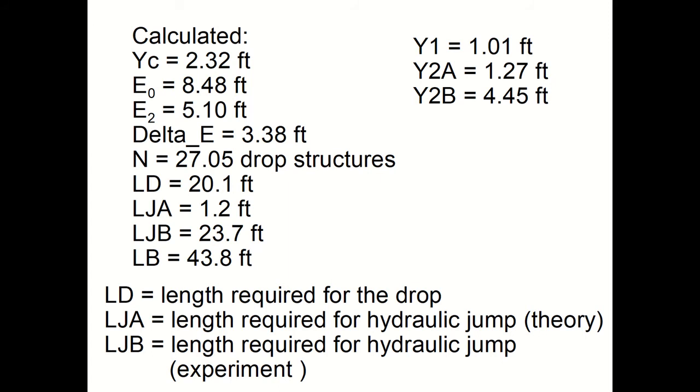This gives us a number of drop structures to be 27.05. The length of the drop structure required for the drop, LD, equals 20.1 feet. Now the length of the drop structure required for the jump according to the theory is 1.2 feet and according to the lab is 23.7 feet. So you can see that the theory in this case doesn't do very well in terms of predicting the length required for the hydraulic jump to develop.